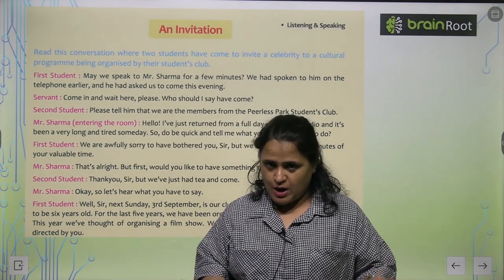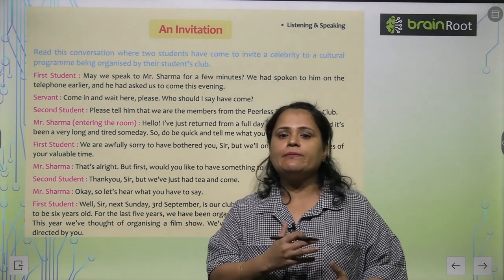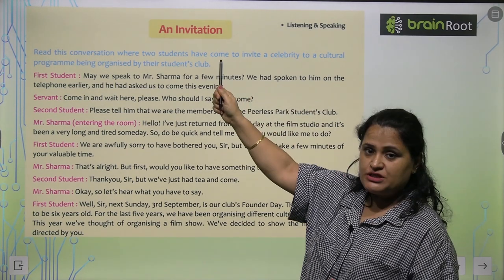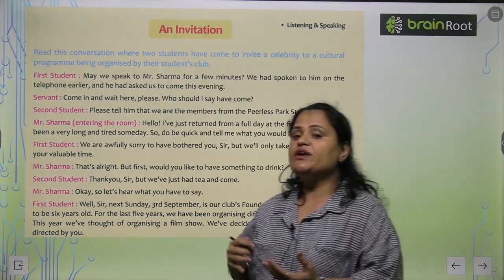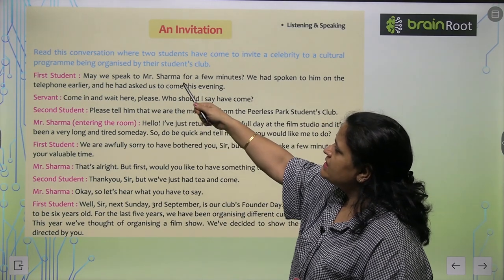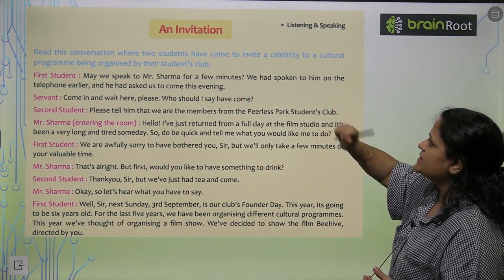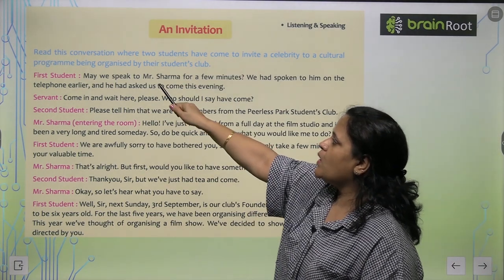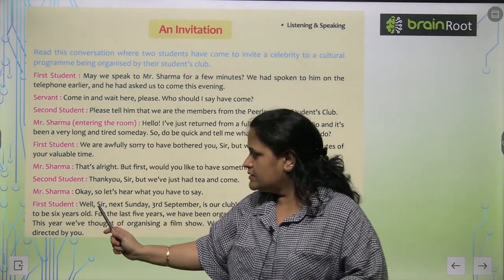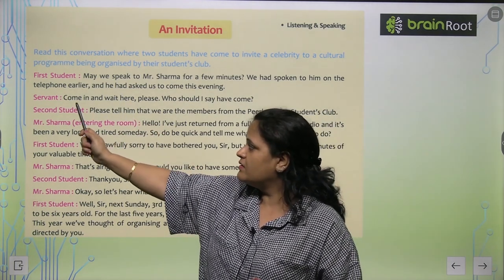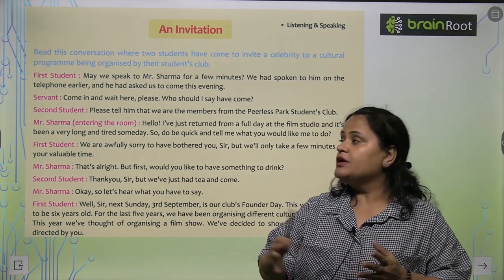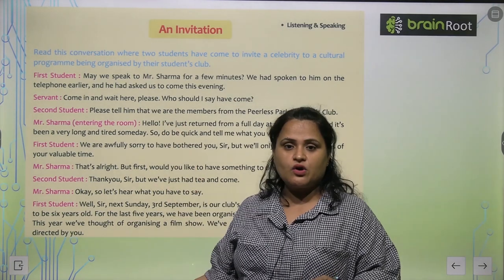So we are done with the topic pronouns. As I told you, in between your book there are composition topics. So there is a listening and speaking composition like an invitation — when we invite someone, what should be the format? How should we invite them? Read this conversation where two students have come to invite a celebrity to a cultural program being organized by their students' club. You can practice this — the characters are first student, servant, second student, and Mr. Sharma. Four friends can take these roles and practice this exercise.